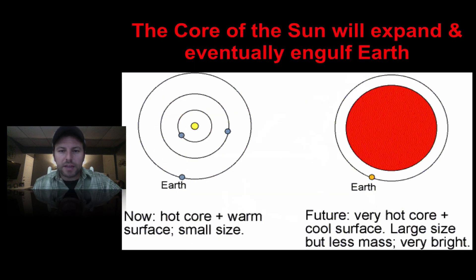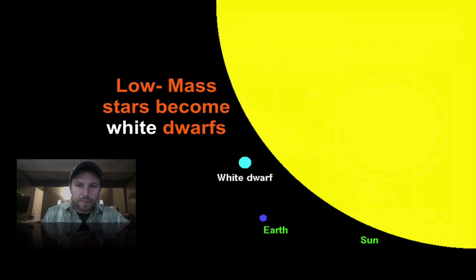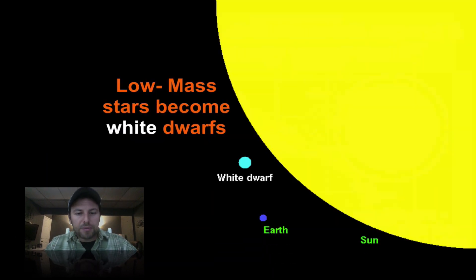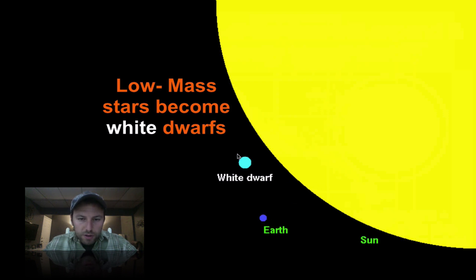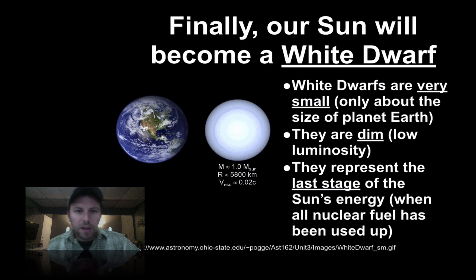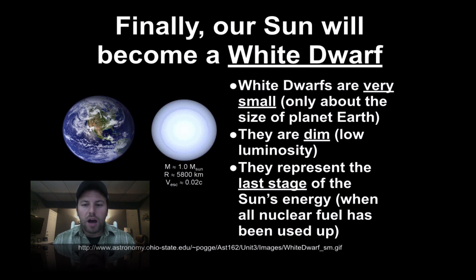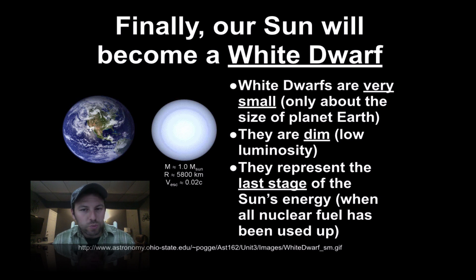This diagram shows the size of that red giant — our sun will expand after it has run out of burning hydrogen, and eventually become a white dwarf. You can see the relative sizes here: the sun, the Earth — we know the sun is a lot bigger — but a white dwarf star is extremely small. Our sun will eventually become that white dwarf, only about the size of planet Earth. They are extremely dim, have low luminosity, and represent the last stage of the sun.